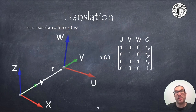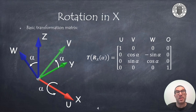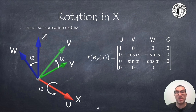We will start by describing the basic transformation of a translation operation. As it can be seen, it is a homogeneous matrix with a last column containing the coordinates of the translation vector t. In the case of a rotation in x, the homogeneous transformation is composed of a 3×3 submatrix corresponding to the rotation matrix in x, and the translation component of the homogeneous matrix, which is a vector with zeros.